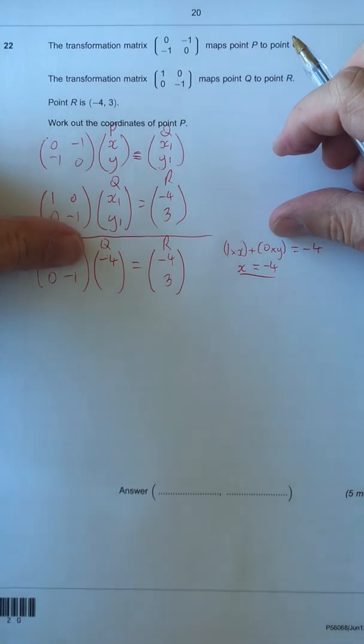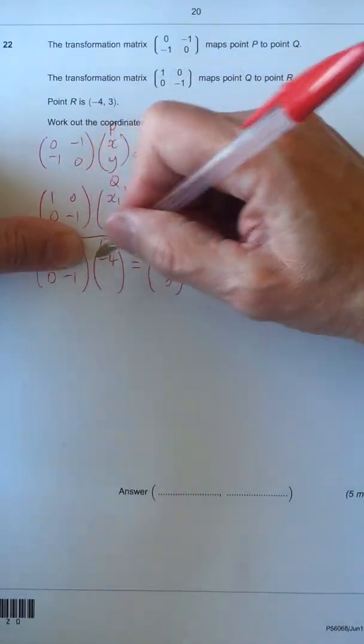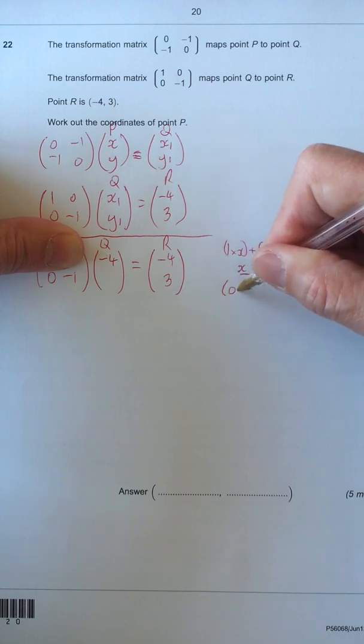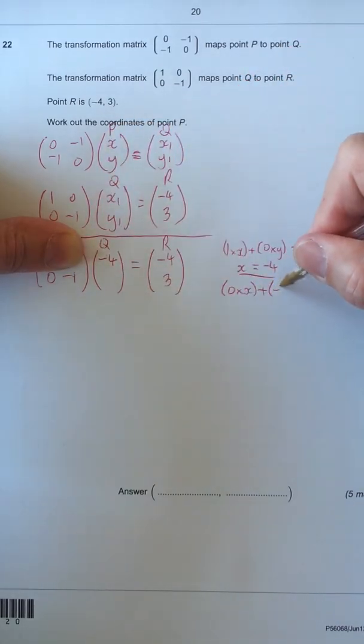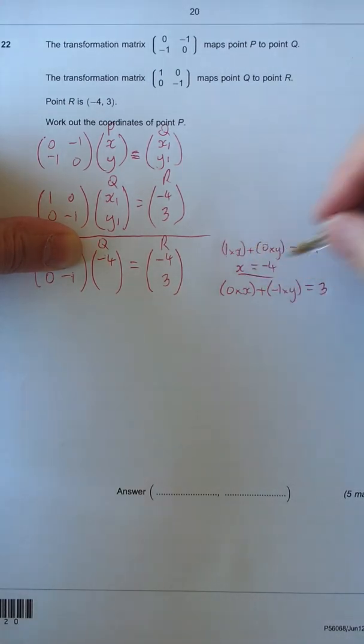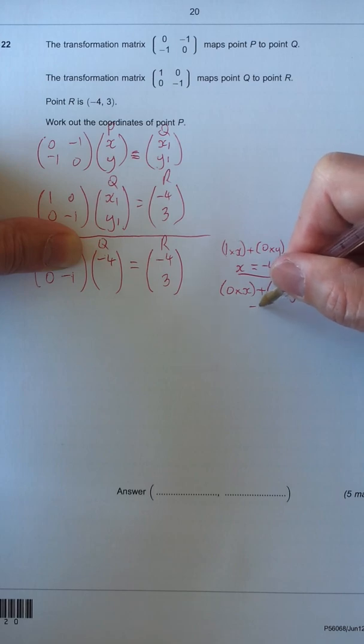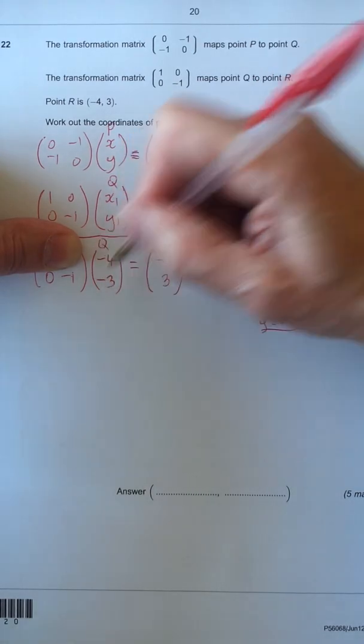Now, let's put my finger or thumb over there, so look for the second part. We've got 0 times minus 4. 0 times X plus minus 1 times the Y value equals the bottom value, which is 3. So let's simplify this. We've got minus 1Y or minus Y equals 3. So that means we divide through by minus 1. So Y equals minus 3. So that's minus 3 there.